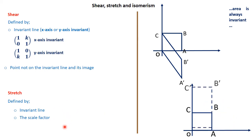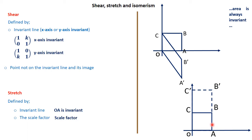This could also work another way. If a rectangle OABC transforms to O, A, B prime, C prime, then in this case the invariant line is OA — OA did not change, but everything else changed perpendicular to it. The scale factor would be OC prime divided by OC — the whole distance of the image divided by the distance of the object — or A B prime divided by AB. That's how we define a stretch.